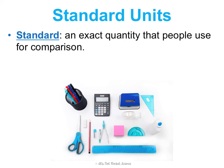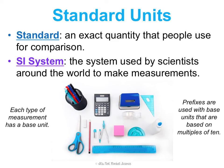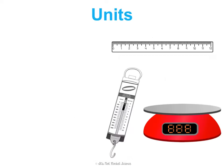A standard is an exact quantity that people use for comparison. Since different people use different units all over the world, we had to choose some sort of standard so that we're all speaking the same language in terms of the data we're collecting. So the SI system was born — it's a system used by scientists around the world for making measurements so that we can compare them easily. Each type of measurement has a base unit, and prefixes are used with these base units based on multiples of 10.